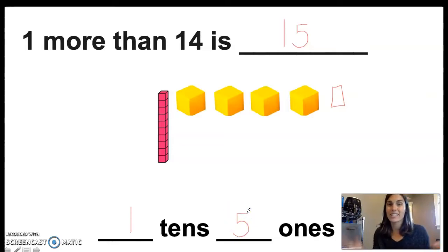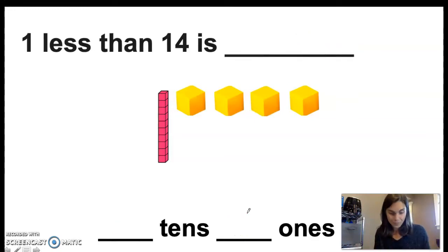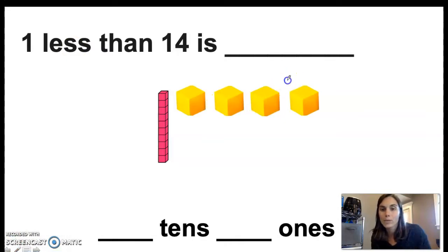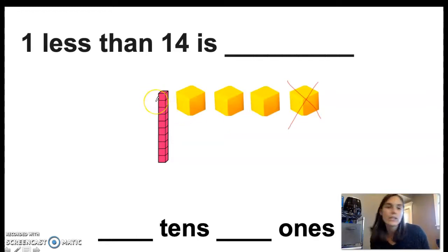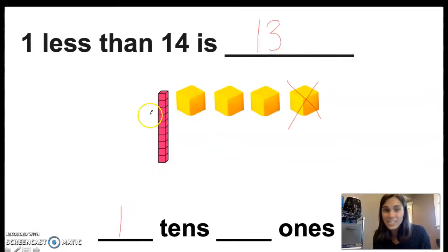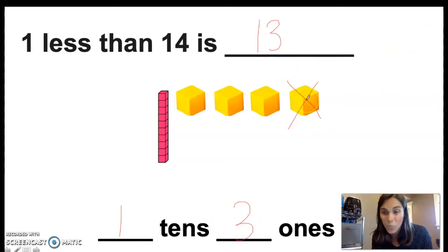Our next job is to do 1 less. Go ahead and make sure you have 1 ten and 4 ones, so you have the number 14. Now we're going to do 1 less — we're just going to take away 1 ones cube. I'm going to go ahead and cross this one out. You can take a ones cube and put it to the side. Now instead of 14, I have 10 — I still have a 10 — 11, 12, 13. Now I have 13. And I know that 13 is 1 ten — it's still 1 ten because we didn't change the 10s — and now we only have 3 ones because I took 1 one away.